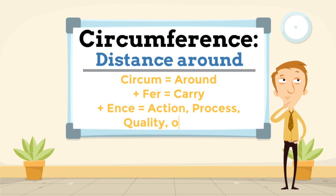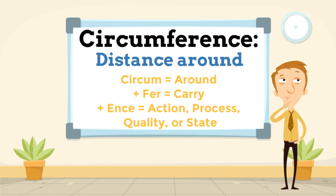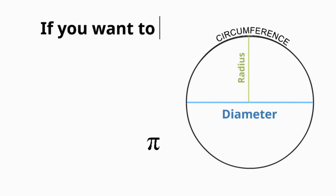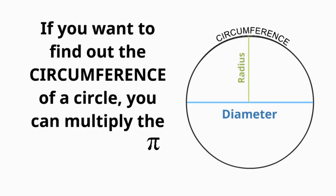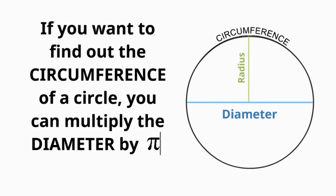Circumference is the distance around. Circum, meaning around, plus fer, meaning carry, plus ince, meaning action, process, quality, or state, make circumference. If you want to find the circumference of a circle, you can multiply the diameter by pi, which is 3.14.